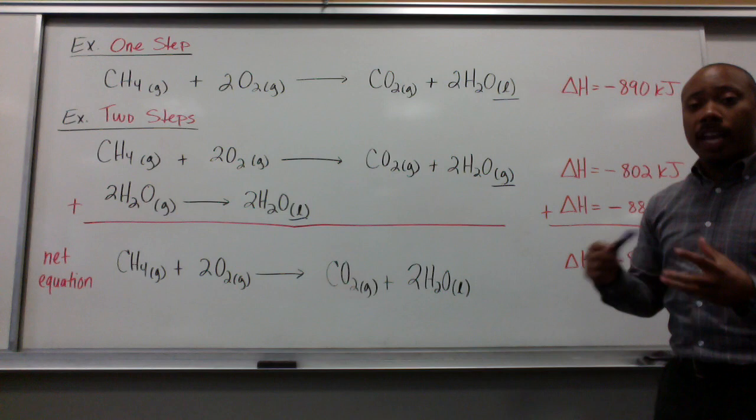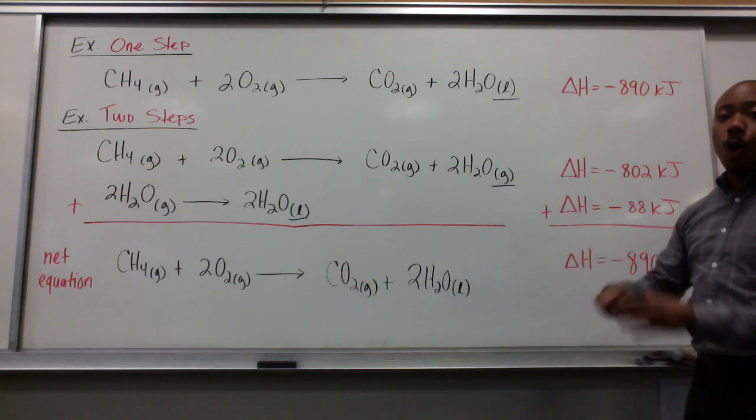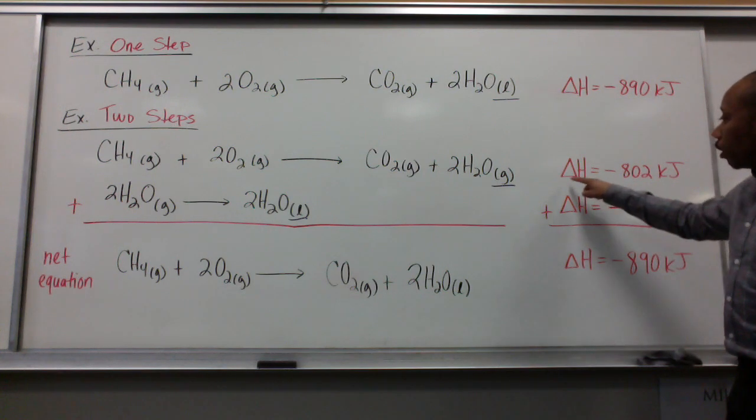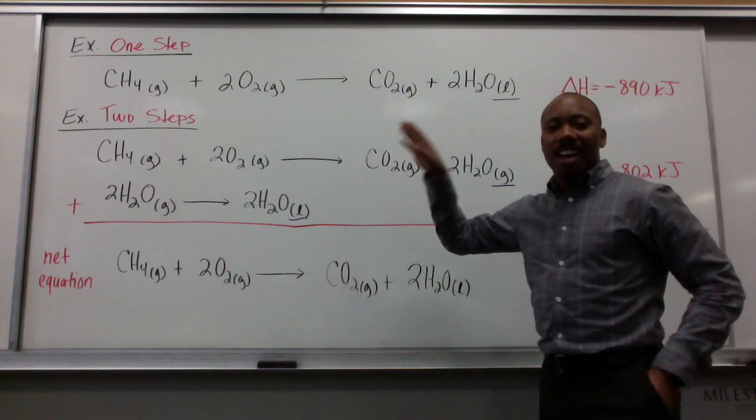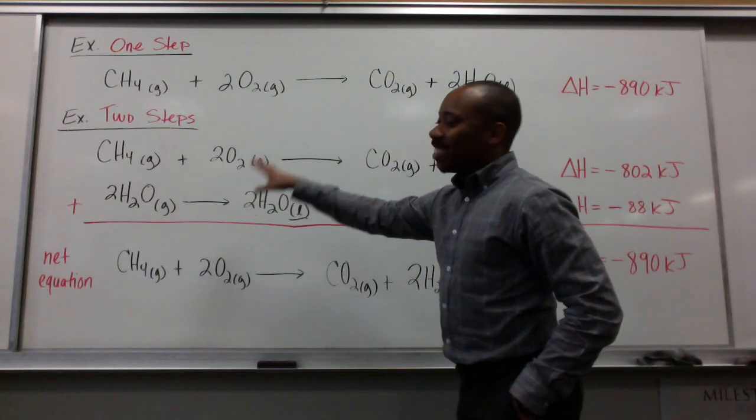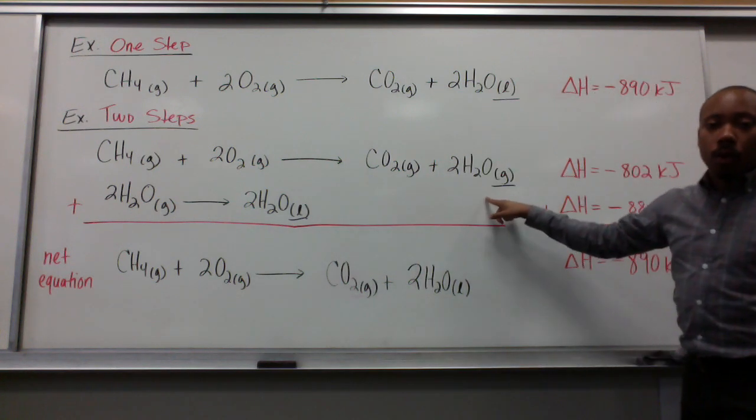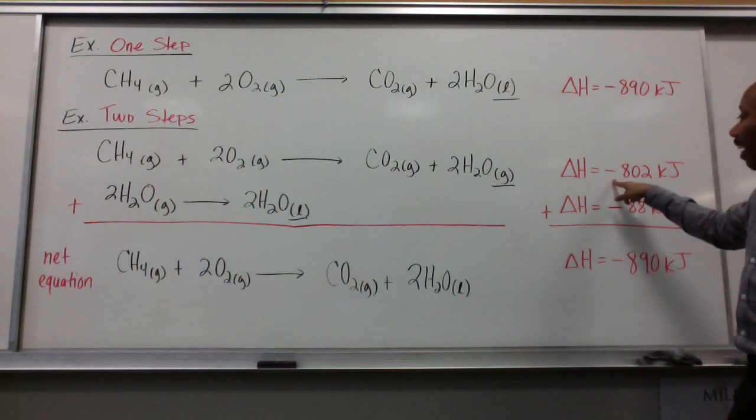I could use the individual changes in enthalpy for these two steps to find the overall change in enthalpy for the reaction. So, delta H for this first reaction, methane gas reacting with oxygen gas to produce carbon dioxide and two moles of water in vapor. The change in enthalpy for that one is negative 802 kilojoules.